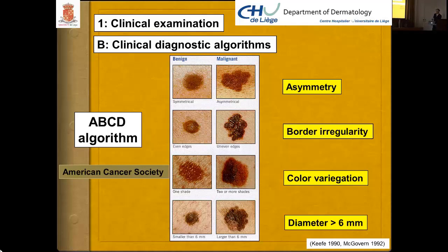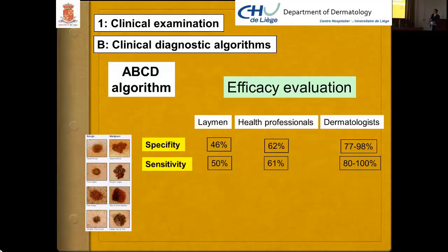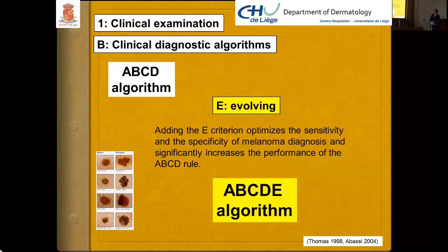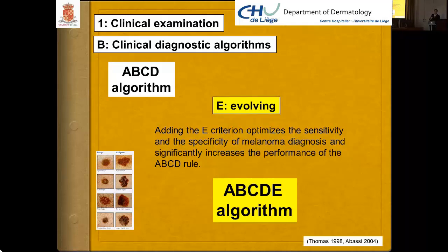The efficacy of these tools differs among non-health professionals, health professionals, and dermatologists — specificity and sensitivity increasing with experience. A very important addition is the E-criterion: E for Evolving. Asking patients whether the lesion is changing or not seriously optimizes the sensitivity and specificity of melanoma diagnosis.